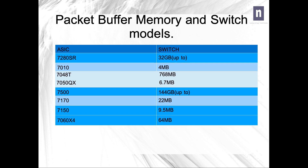Chassis switches can have up to 144GB of buffer. It's very important when choosing a switch for a particular application or use case that you pay special attention to your traffic flows — where are your sources, where are your receivers — and then make the right decision on the amount of packet buffer memory you'll need.